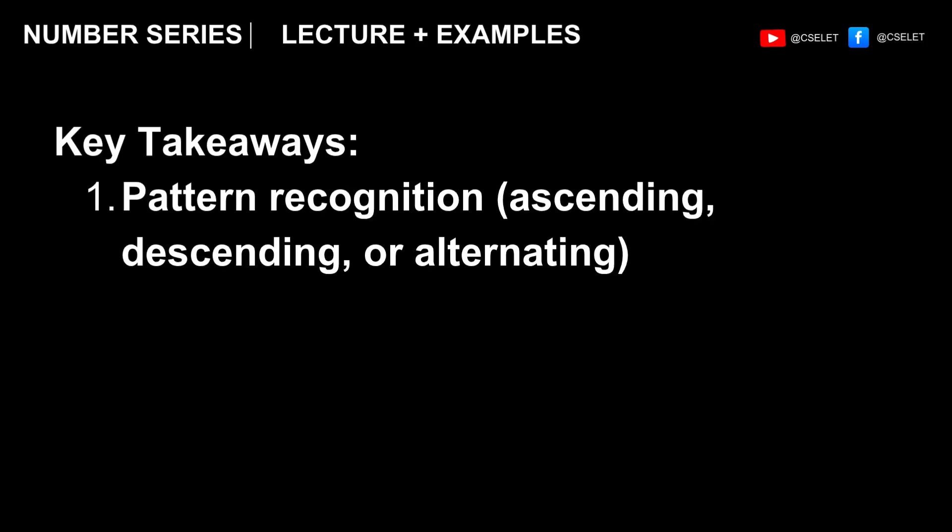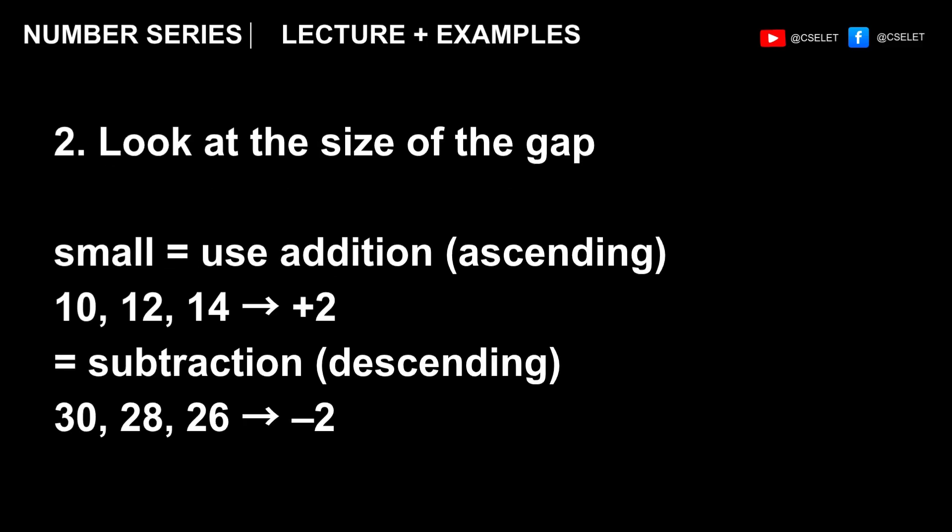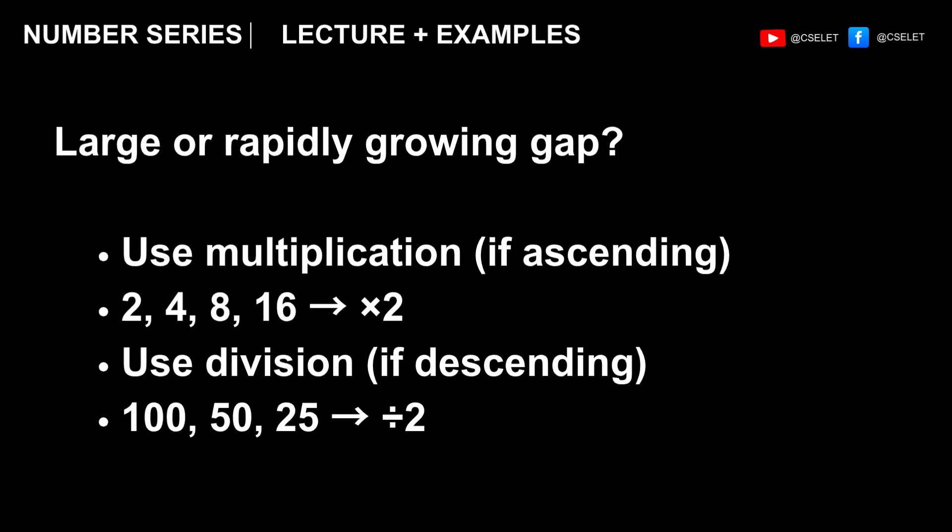Key takeaways would be number 1, pattern recognition. Determine immediately if the numbers are ascending, descending, or alternating. Number 2, look at the size of the gap. If the numbers are ascending and the gaps are not that large, use addition. If descending but still small gaps, use subtraction. But for larger or rapidly growing gaps, use multiplication if the numbers are ascending, or use division if the numbers are descending. It's easy, right?